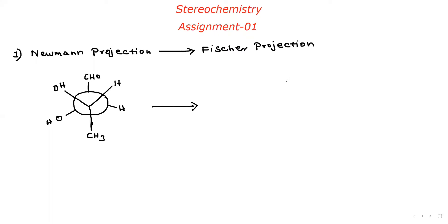Hello everyone, welcome to VJ Chemistry. Today we are going to discuss the Stereochemistry Assignment 1. The first question asks about converting the Newman projection to Fischer projection. How do we convert a Newman projection to a Fischer projection?